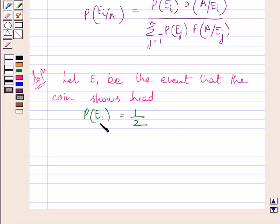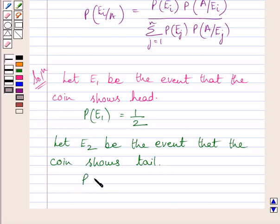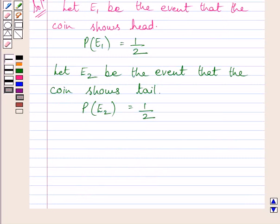So probability of getting head is equal to 1 upon 2. Now let E2 be the event that the coin shows tail. The probability of E2 is equal to 1 upon 2, since the number of outcomes favorable to tail is 1 and the number of total possible outcomes is 2.